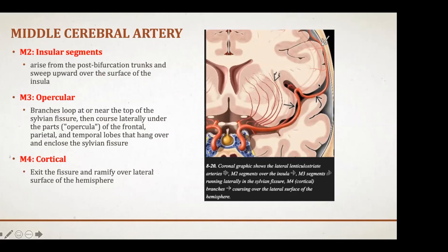These would be the M3 or opercular branches. The M1 gives off medial lenticulostriate arteries off the ACA, and lateral lenticulostriate arteries off the MCA. The M4 are the cortical branches of the MCA, and they exit the sylvian fissure over the lateral surface of the hemisphere.